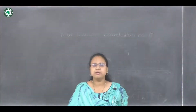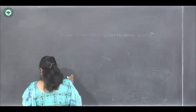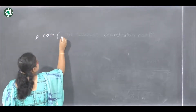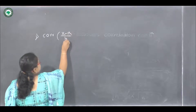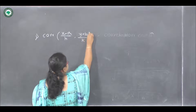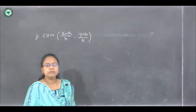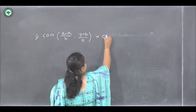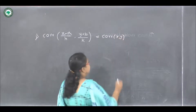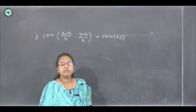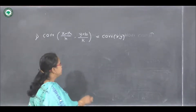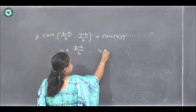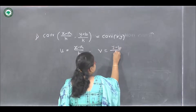Now let us see some properties of Karl Pearson's correlation coefficient. The first property is: the correlation between (x minus a)/h and (y minus b)/k equals the correlation between x and y. So let us find out the effect of change of origin and scale on correlation. Suppose u = (x − a)/h and v = (y − b)/k.